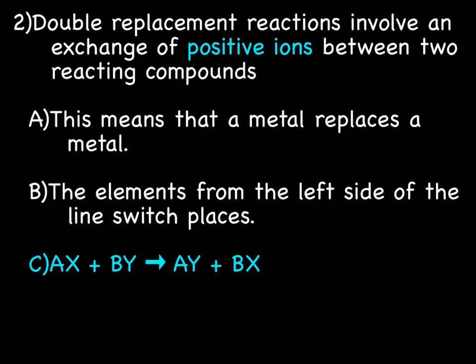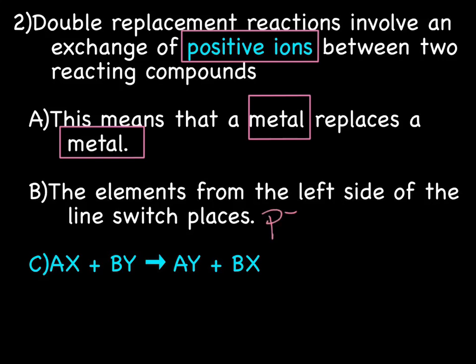With a double replacement reaction, it involves the exchange of the positive ions, or the cations, between two reacting compounds. That means, in the reaction, the metal replaces the metal. And another way to look at that is that the elements from the left side of the line switch places. We're talking about on the periodic table.